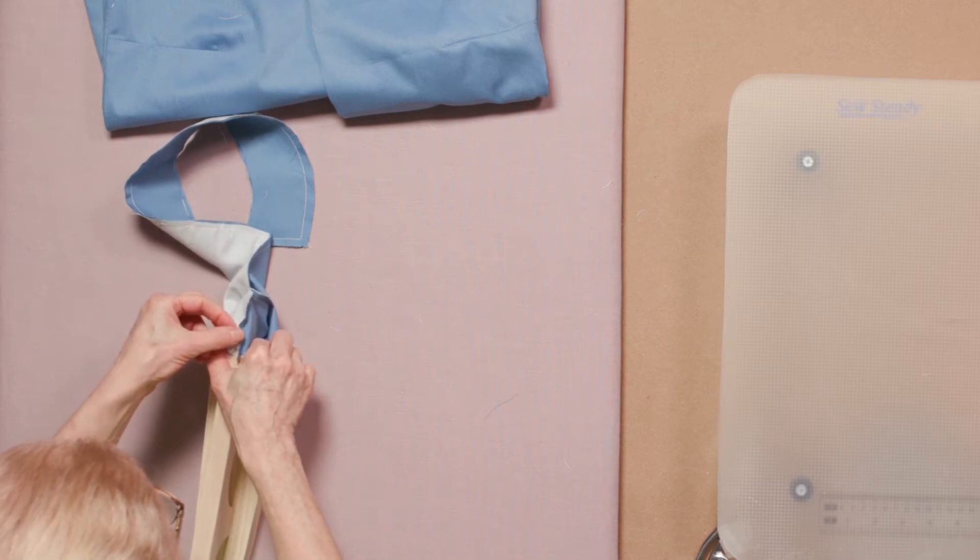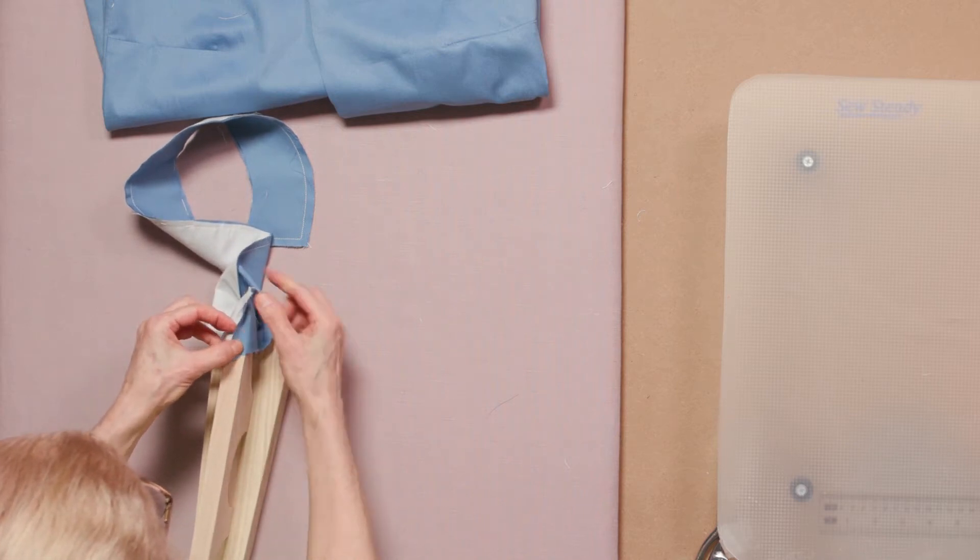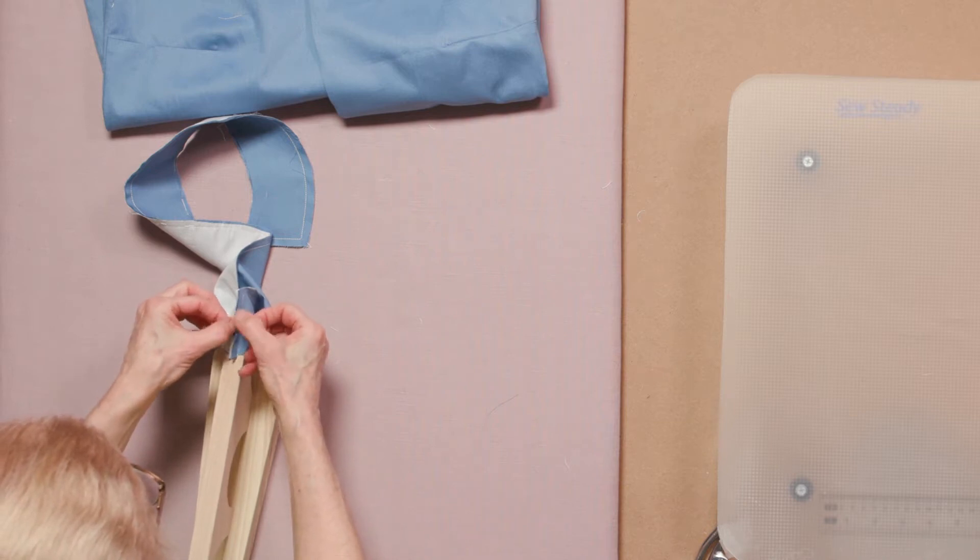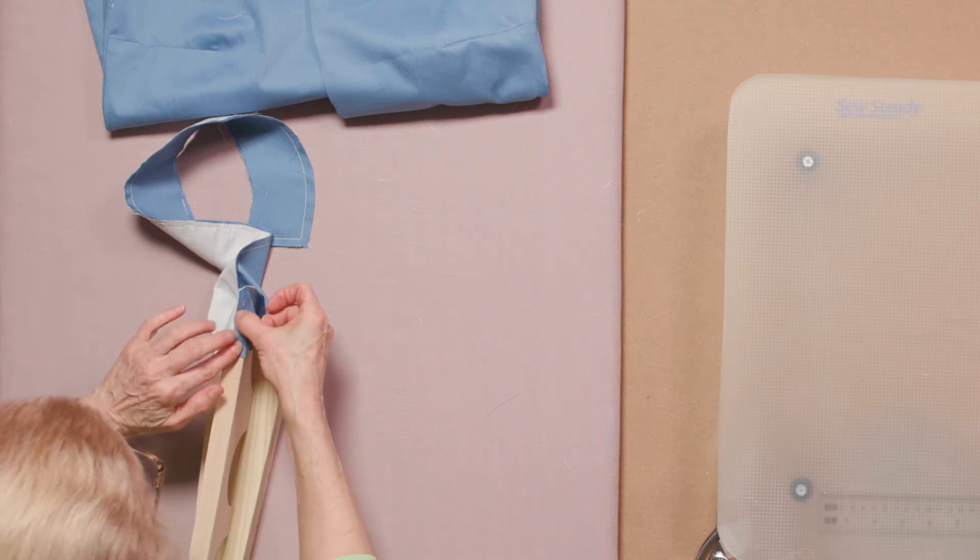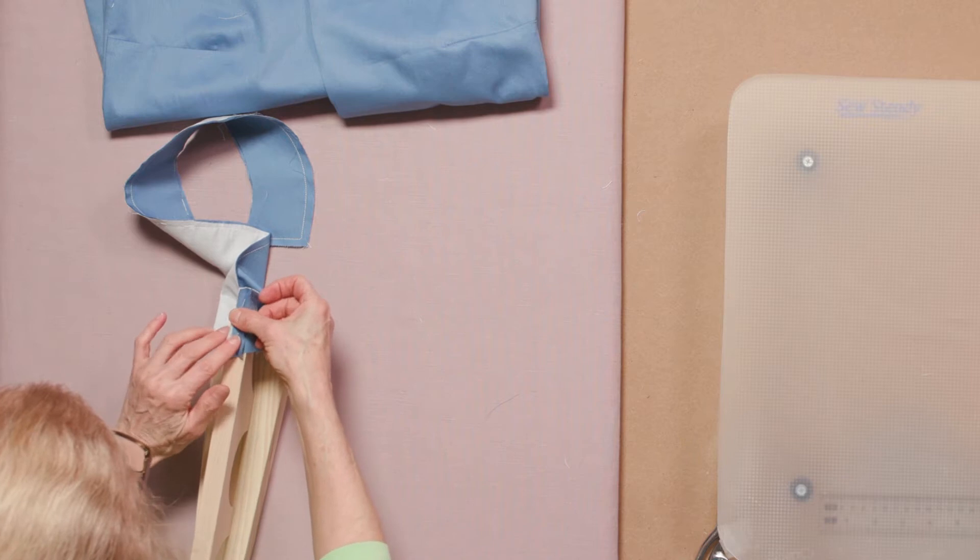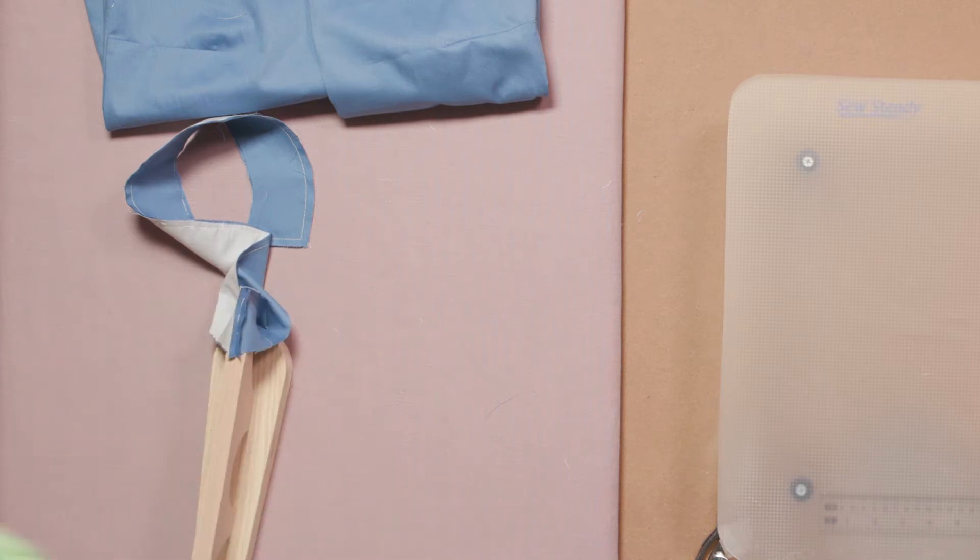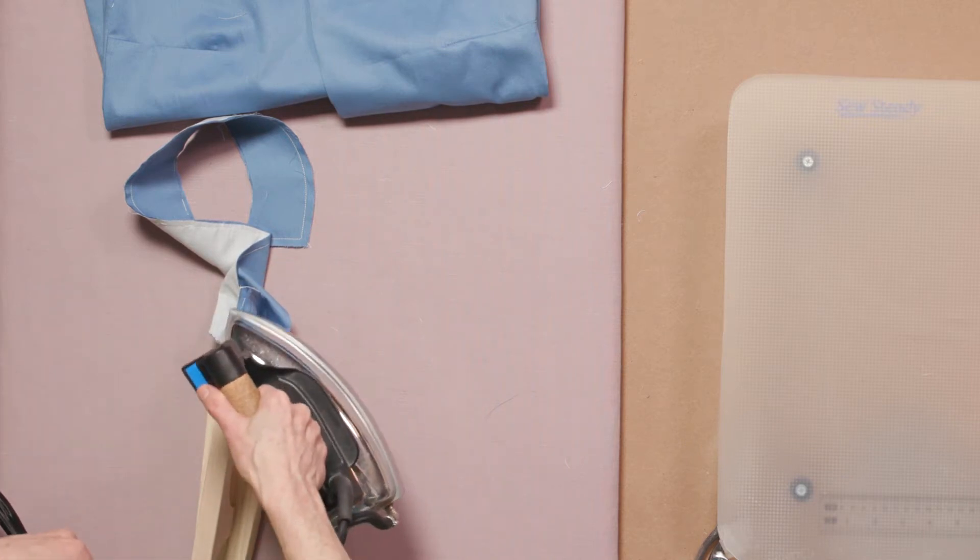On the flat corners of the collar I'm going to open the seam and press it flat. I press with my fingers first and then with the iron.